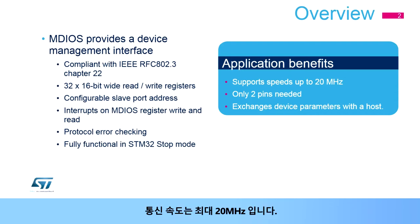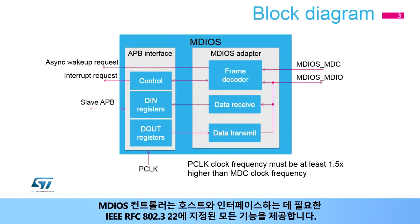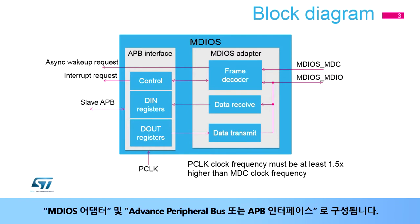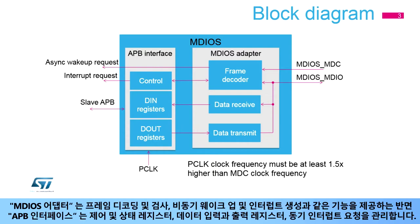The communication speed can go as high as 20 MHz. The MDIOS controller provides all the functions specified in IEEE RFC802.3 Chapter 22 needed to interface with a host. It consists of an MDIOS adapter and an Advanced Peripheral Bus, or APB, interface. The MDIOS adapter provides functions such as frame decoding and checking, asynchronous wake-up and interrupt generation, while the APB interface manages the control and status registers, data in registers, and data out registers.